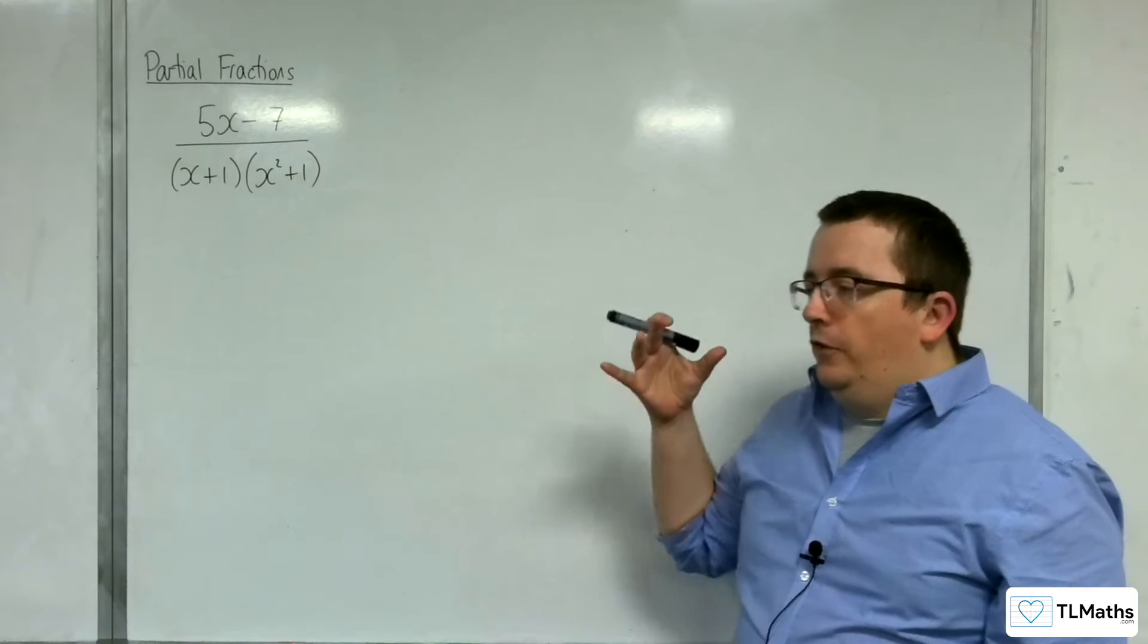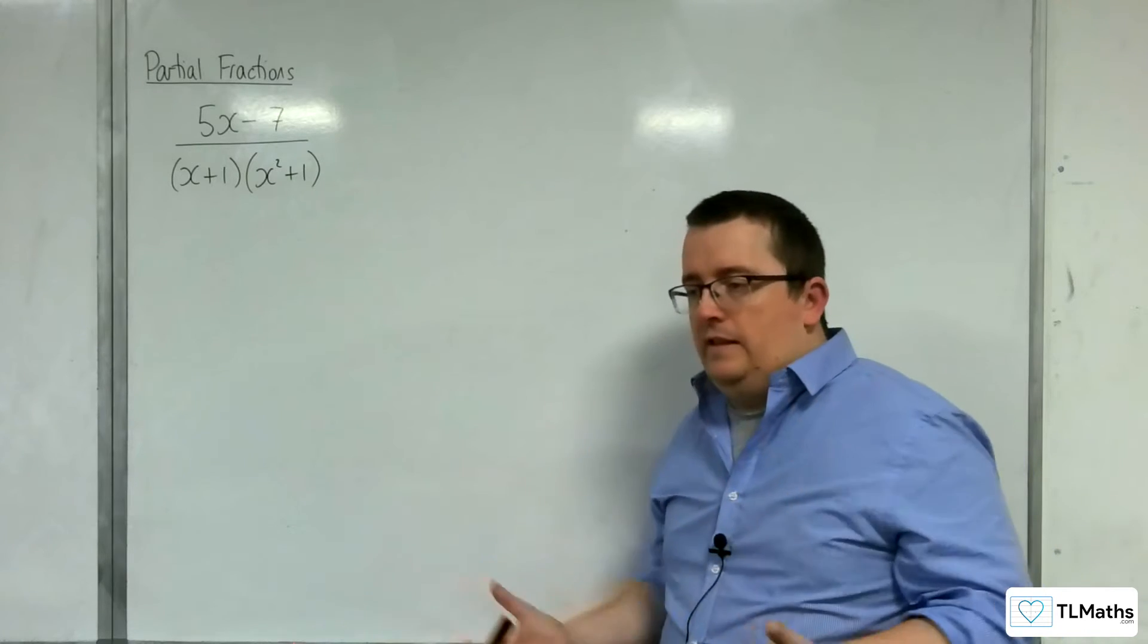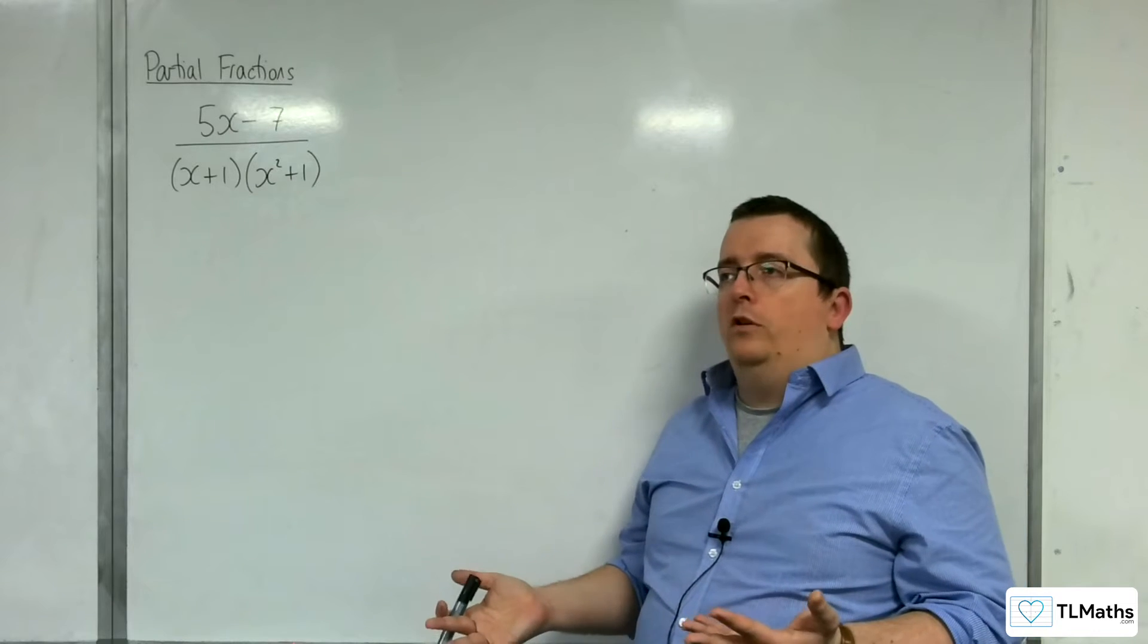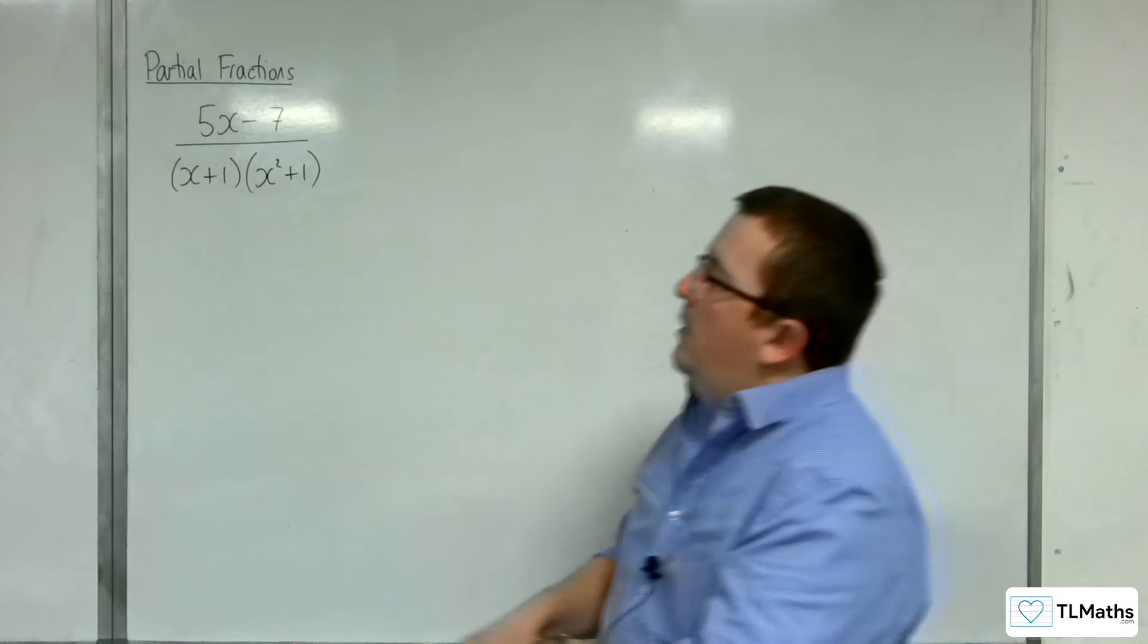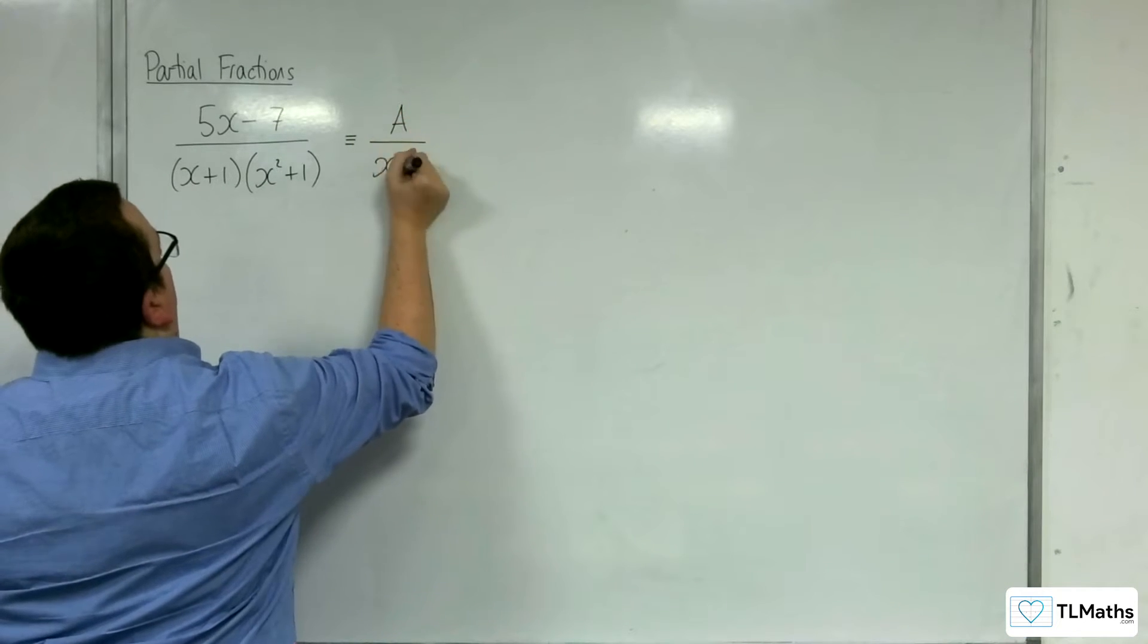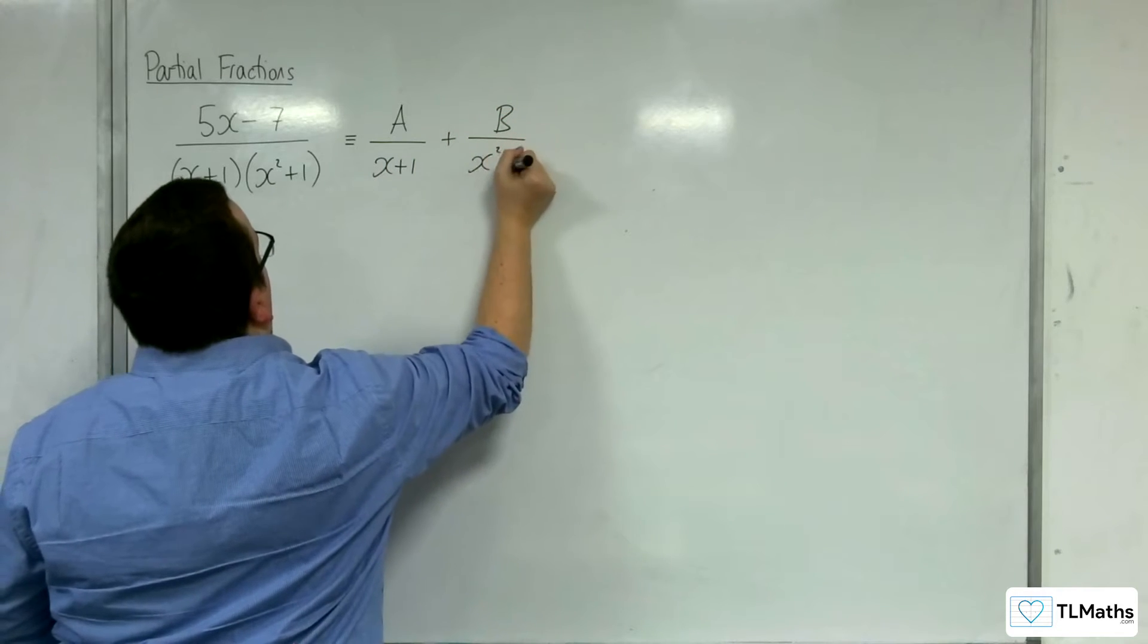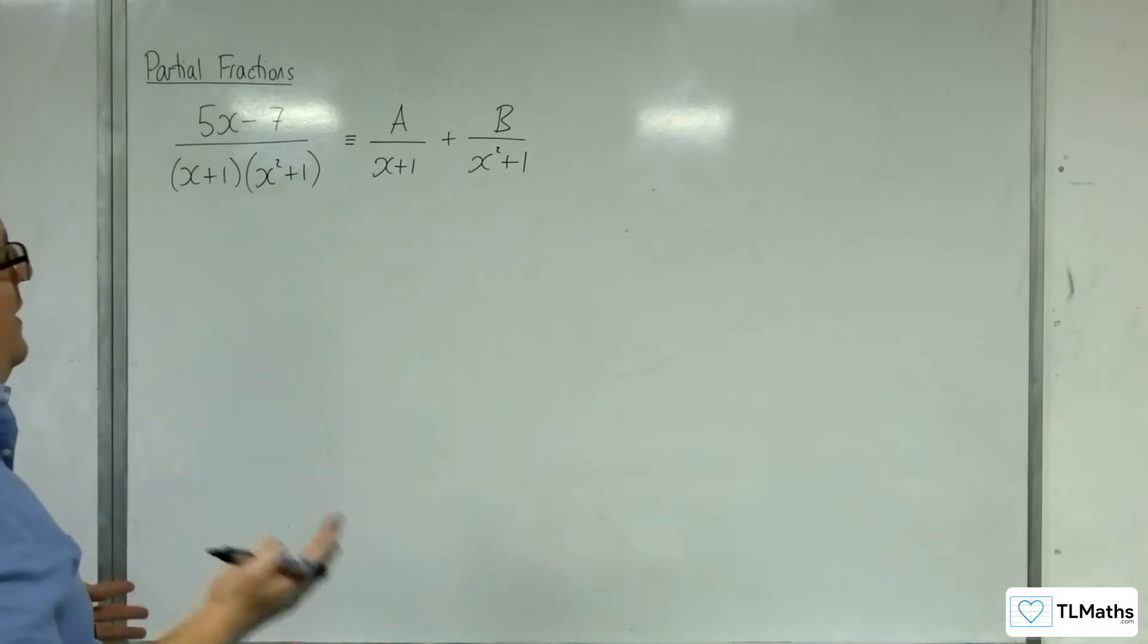So the first thing to do, rather than just go and write this is how we do it, is to explore what you might try first. And you might try, well, I could write this as A over x plus 1 plus B over x squared plus 1. Maybe that will work. Let's see.